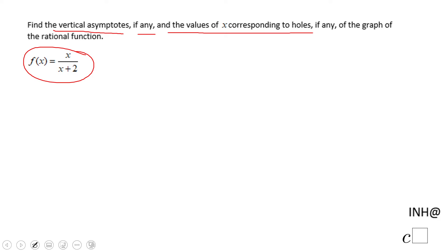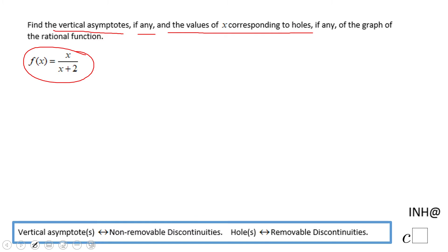So for finding the asymptote or the hole, we need to find the non-removable discontinuity or the removable discontinuity. How we get those? Very simple. You make the denominator equal to zero and you solve it, and you get x equals two. This guy is either an asymptote or a hole.